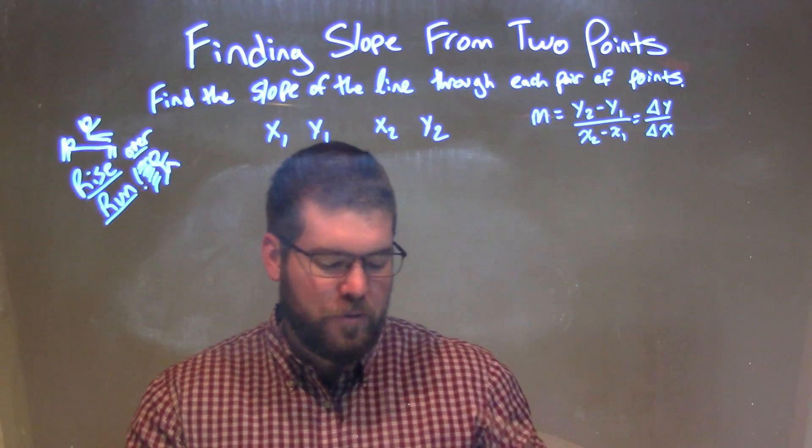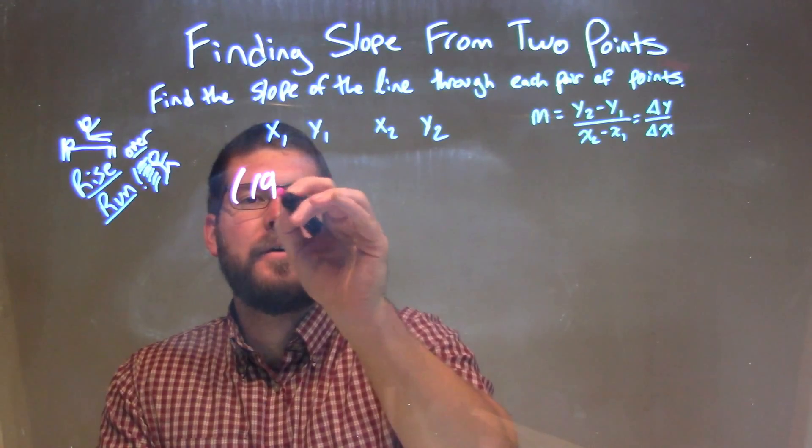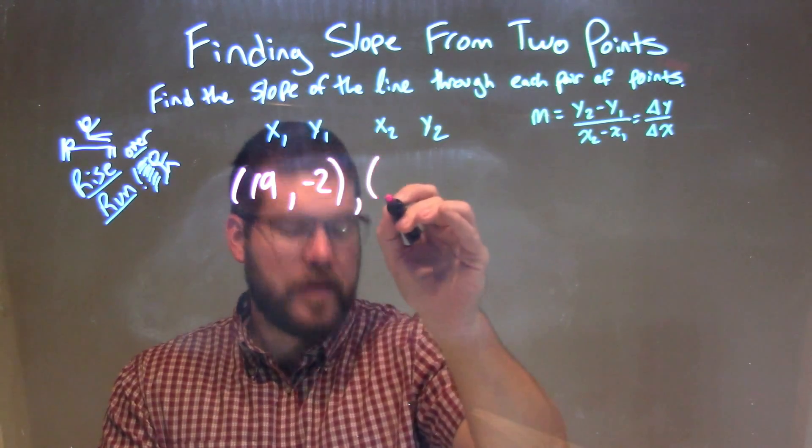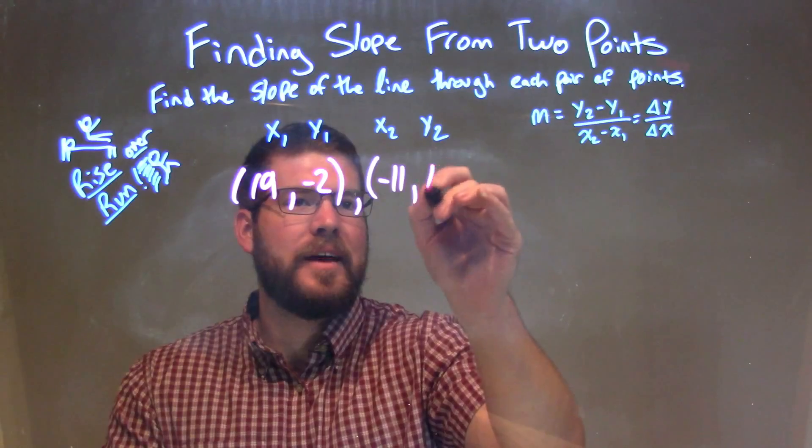So if I was given these two points here: 19, comma, negative 2, and my second point being negative 11 and 10.